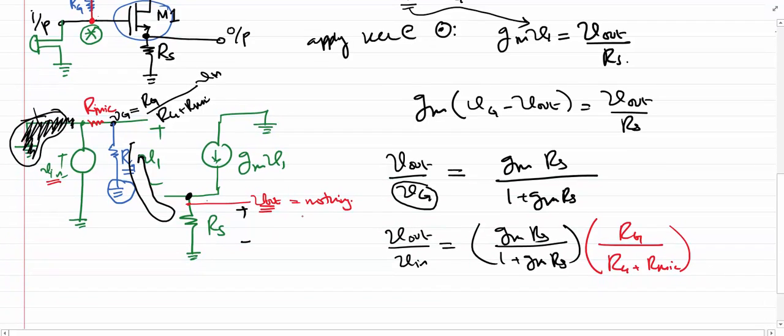Remember, before placing Rg in the circuitry, that was the voltage gain for the source follower. Now that we have introduced Rg, this is going to be a new factor in the voltage gain regulation. Let's call this factor the attenuation factor.